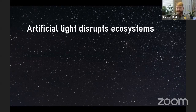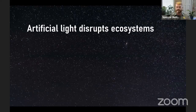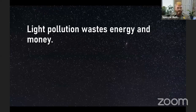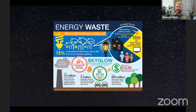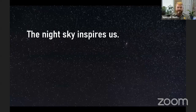Artificial light also disrupts ecosystems. Lights in cities lead sea turtle hatchlings away from the ocean and into towns, disrupt amphibians' mating patterns, and interfere with the migrations of birds and moths, affecting the lives of all sorts of nocturnal animals. And light pollution is a waste of energy and money, contributing to climate change. At least a third of all outside lighting is wasteful and polluting — the equivalent of about three billion dollars spent a year, or the emissions of about three million cars annually.